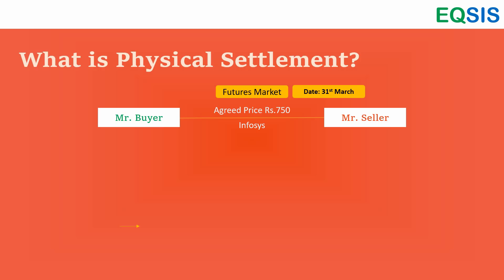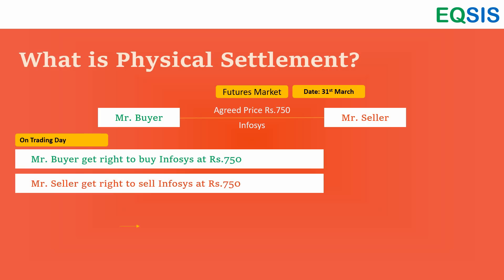In the futures market it is quite different. As a buyer, I am not actually buying the asset from you, and you as a seller are not actually selling the asset to me. Rather, we are trading rights — rights to buy and rights to sell. So at the end of a trading day, the buyer gets rights to buy Infosys and the seller gets rights to sell Infosys. In the equity market we talk about the product itself, but in the futures market we talk about rights to buy and rights to sell.